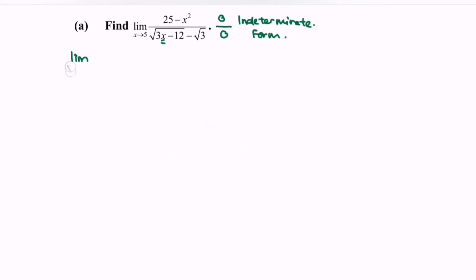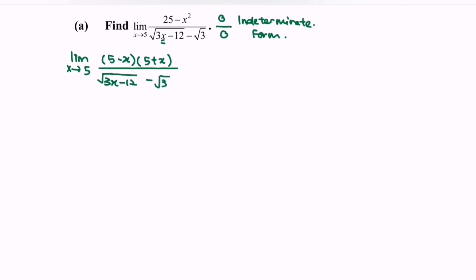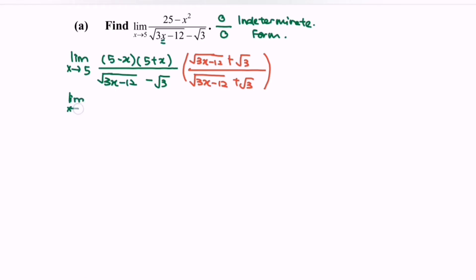So, limit as x approaches 5, we factorize the numerator 25 minus x squared as (5 minus x)(5 plus x), over (square root of 3x minus 12 minus square root of 3). At the same time, remember to multiply by the conjugate, which is (square root of 3x minus 12 plus square root of 3). We only expand one part — the denominator.